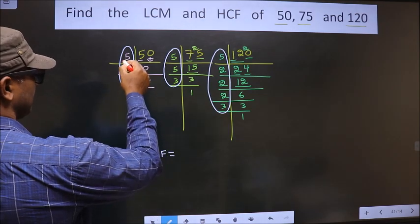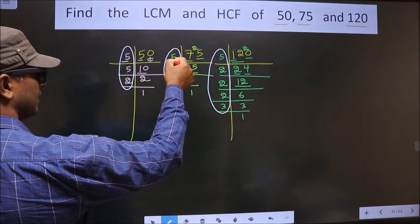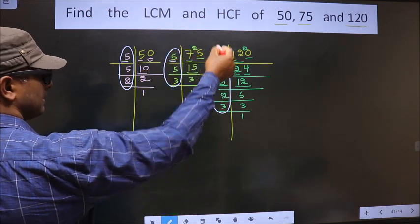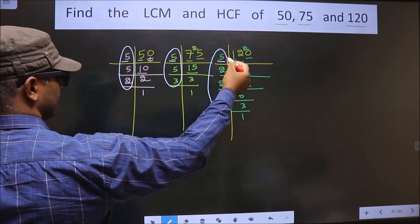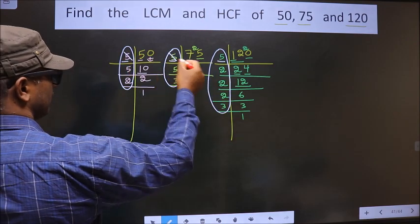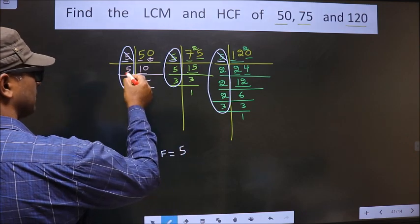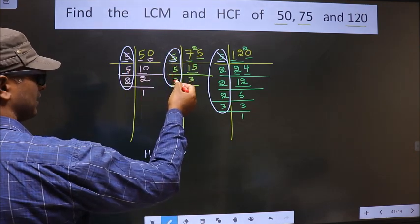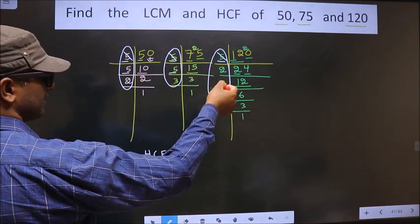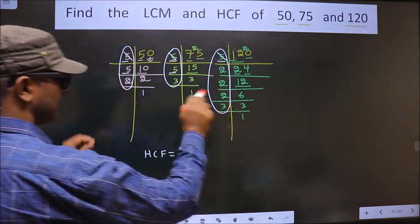Starting with the number 5. Do we have 5 here? Yes. Next place. Do we have 5 here? Yes. So now you cut 5 right here. Next number is 5. Do we have 5 here? Yes. Next place. Do we have 5 here? No.